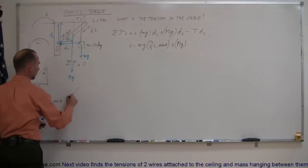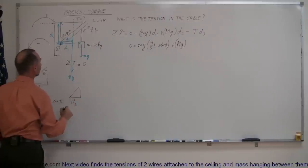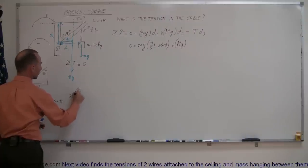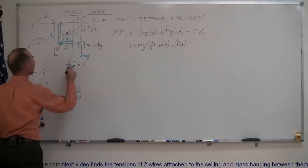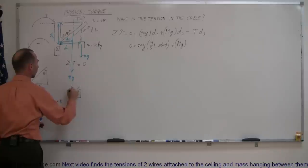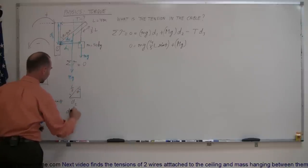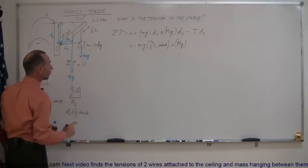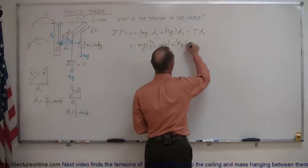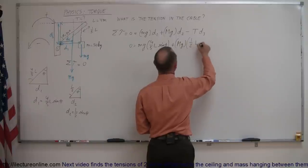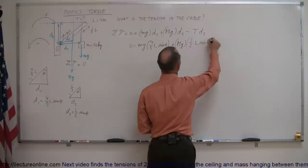Let me draw the little triangle. We have d2 here. We know this angle is 45 degrees, so this angle is theta as well. The hypotenuse is half the length of the beam — L over 2. So d2, which is opposite to the angle, is equal to the hypotenuse L/2 times the sine of angle theta. So that's one-half L times sine of theta.